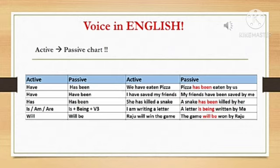See the next one — will. By passive conversion the form is will be. For example: Raju will win the game. By passive conversion: The game will be won by Raju.